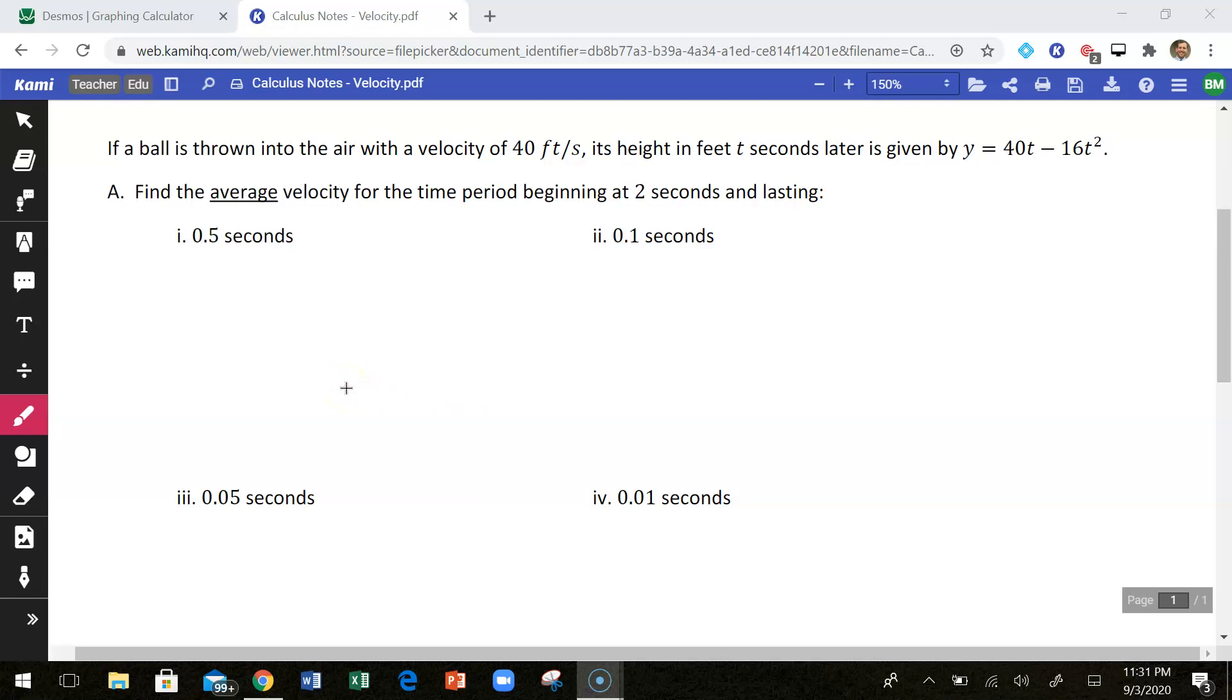So first of all, just a quick setup. What does this mean? Well, all of these time periods are beginning at two, so I'm going to draw kind of like the interval here. This would indicate the time from two to 2.5. This would indicate the time from two to 2.1. This would be from two to 2.05. And this would be from two to 2.01.